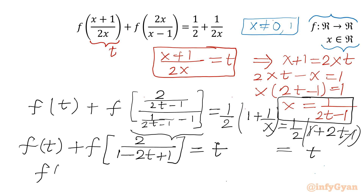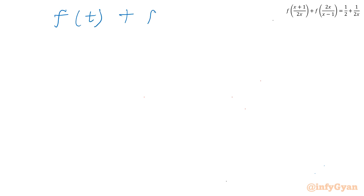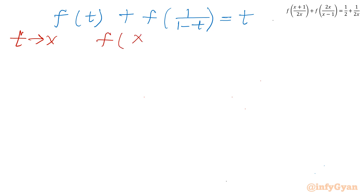Simplifying the argument of the second f, we get 2 divided by (1 - 2t + 1), and with 2 as a common factor we write 1 over (1 - t). So the equation becomes f(t) + f(1/(1-t)) = t. Changing the variable t back to x, we get f(x) + f(1/(1-x)) = x. Let us call this equation number 1.